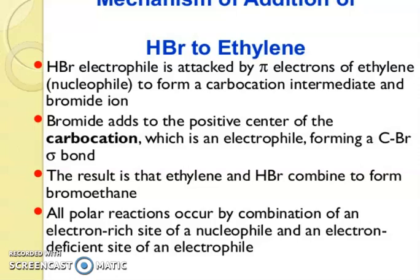Mechanism of addition of HBr to ethylene. HBr electrophile is attacked by pi electrons of ethylene nucleophile, to form a carbocation intermediate and bromide ion. Bromide adds to the positive center of carbocation, which is an electrophile, forming carbon-Br bond. The result is that ethylene and HBr combine to form bromoethane. All polar reactions occur by combination of an electron-rich site of a nucleophile and electron-deficient site of an electrophile.